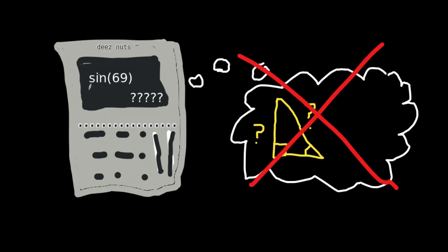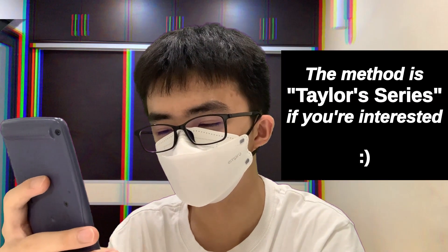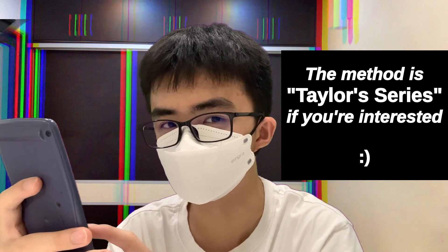Has it ever crossed your mind how calculators do sines and cosines? After all, it cannot draw an accurate diagram in its brain or whatever you call it. Now I really wish that I could have explained further, but it requires more in-depth knowledge in calculus. Anyways, here are the secret formulas.